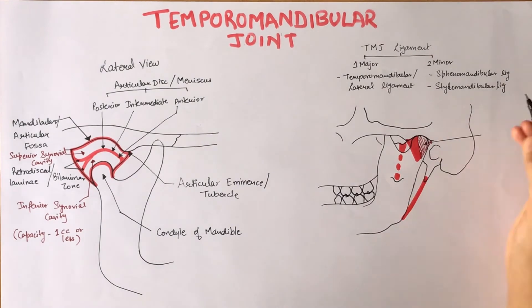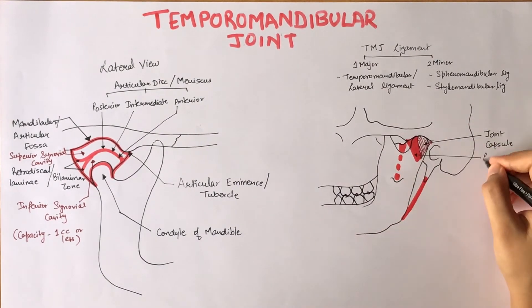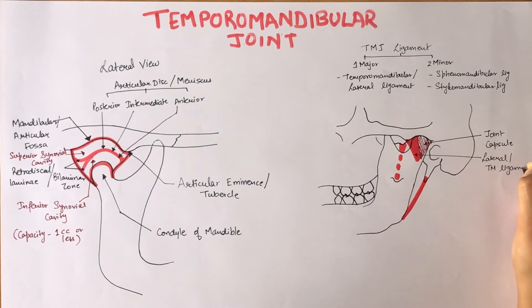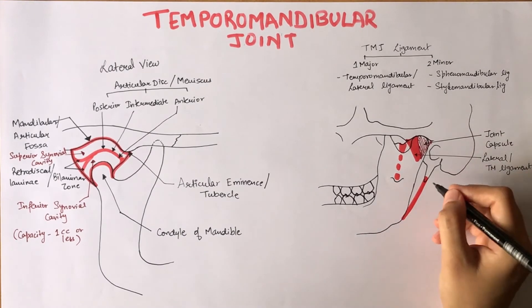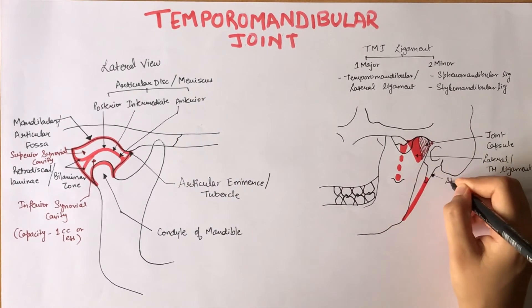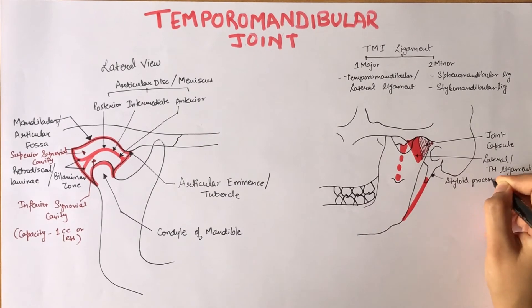The temporomandibular ligament prevents the excessive retraction or backward movement of the mandible, which obviously if occurs can lead to problems within the joint. The stylomandibular ligament separates the parotid and the submandibular salivary gland.